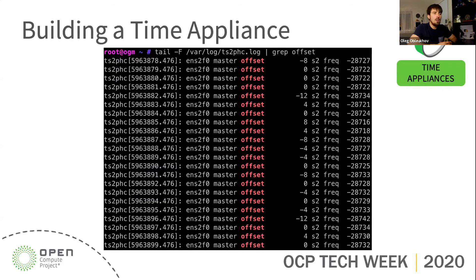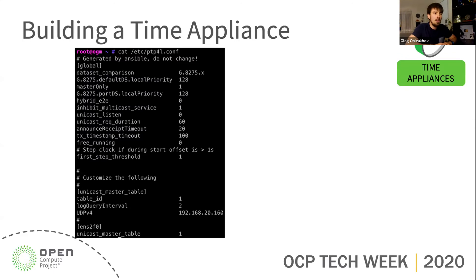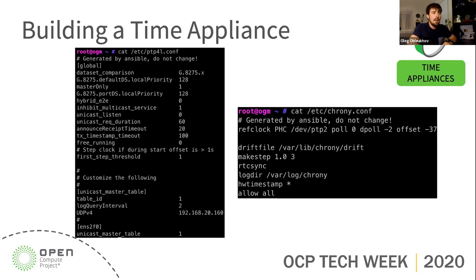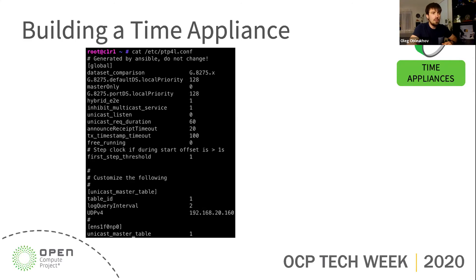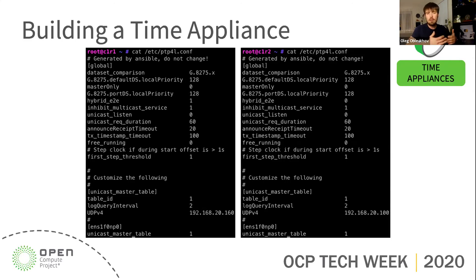We ran TS2PHC and looked at the offset. TS2PHC happily reports that the offset is single-digit — maybe 12 nanoseconds — away from the GPS receiver, which is crazy good; we didn't even trust it at first. Then we ran PTP4L, which serves the PTP protocol from this disciplined NIC, and Chrony for NTP. We also built a boundary clock chain to verify how PTP4L works on commodity servers, since one thing we always heard is that x86 is very bad at achieving good timing precision.